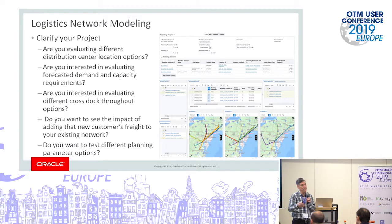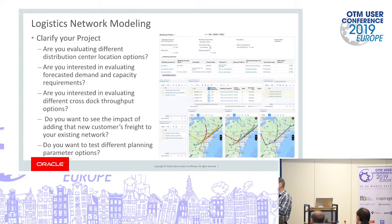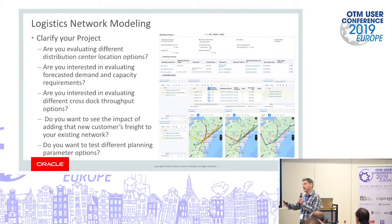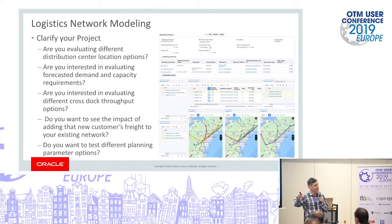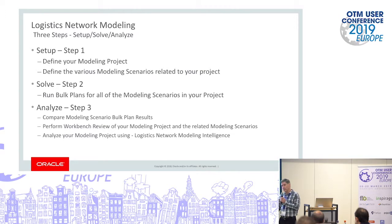With any network-level modeling, the most important thing is to understand what project you want to work on — what you want to test and investigate. For example, I'm going to try two different distribution centers and see the impact on cost, running against one set of orders. Or you might look at forecasted demand to see what carrier capacity you need based on that forecast.